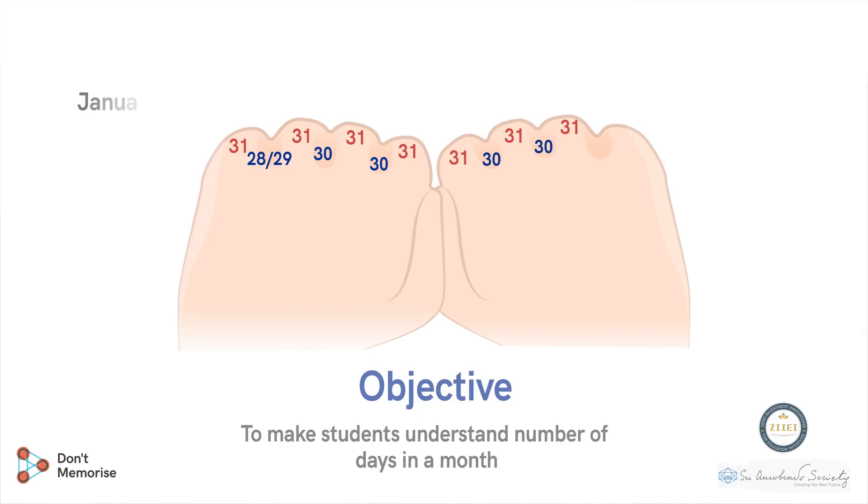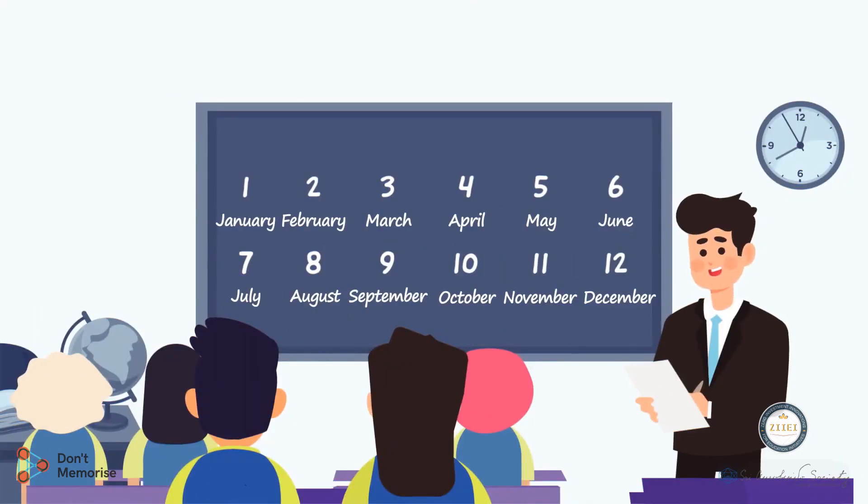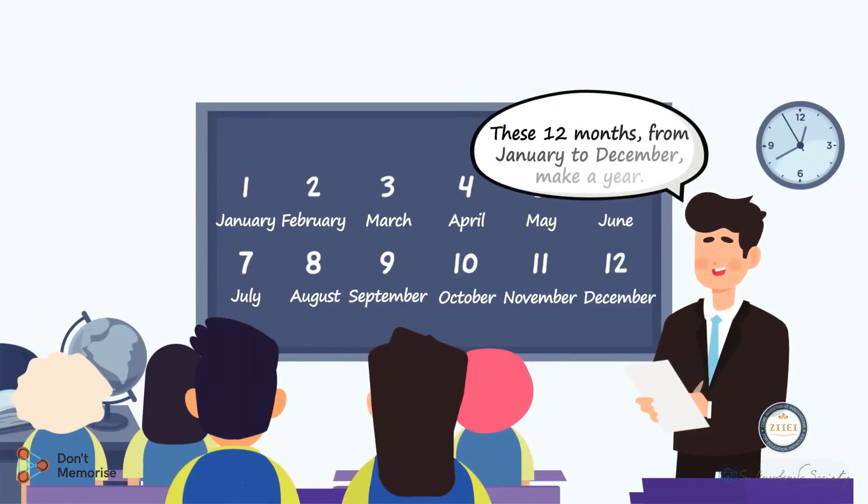Now ask the chosen students to join back their group. Call out January by pointing on the mount of the knuckle. Call out February by pointing on the depression which is next to January. Continue this until you reach the last mound of the knuckle. Repeat the same process again. Convey to the students that these 12 months make a year.